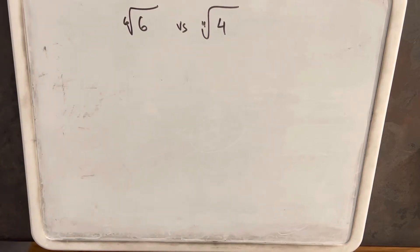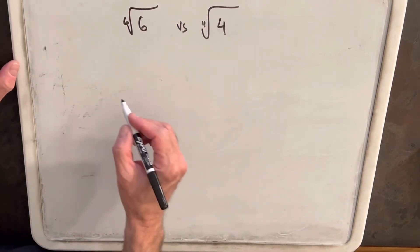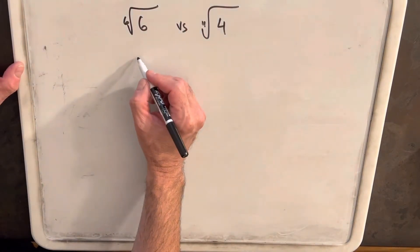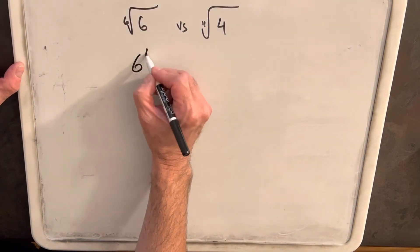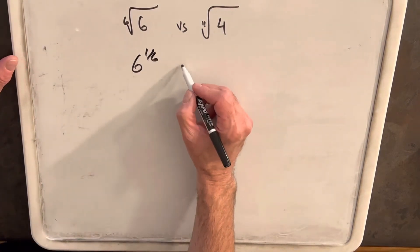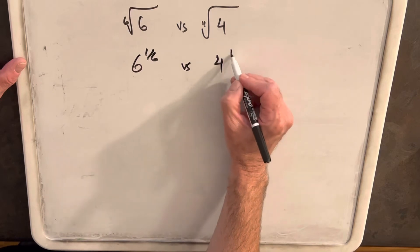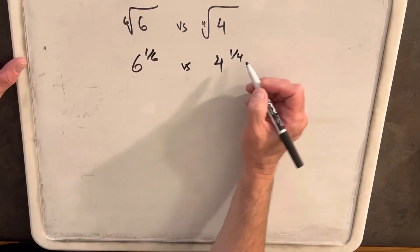We have this 'which is bigger' problem on the board. We're comparing the 6th root of 6 with the 4th root of 4. To get started, I'm going to rewrite this in exponent notation, so we're comparing 6 to the 1/6th power versus 4 to the 1/4th power.